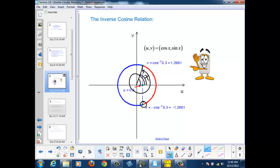but we also have coterminal angles with x that provide an answer to the question, when is my u coordinate 0.3? We also have the point down below,